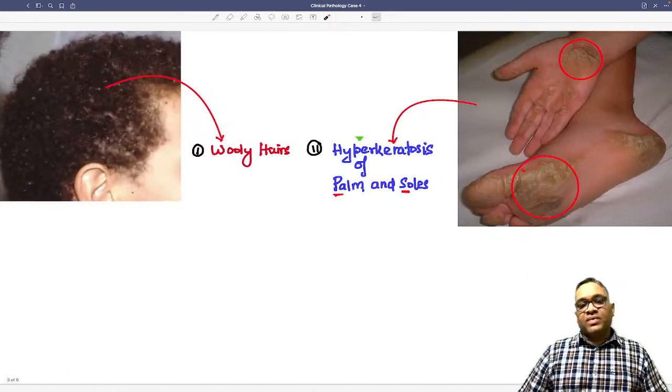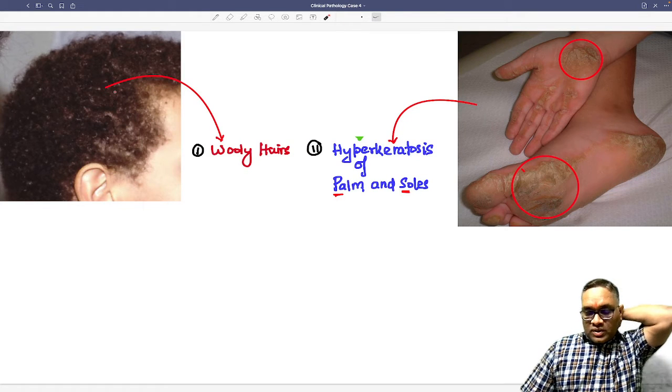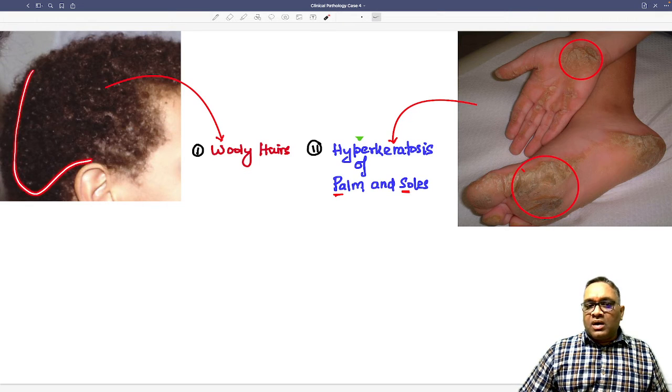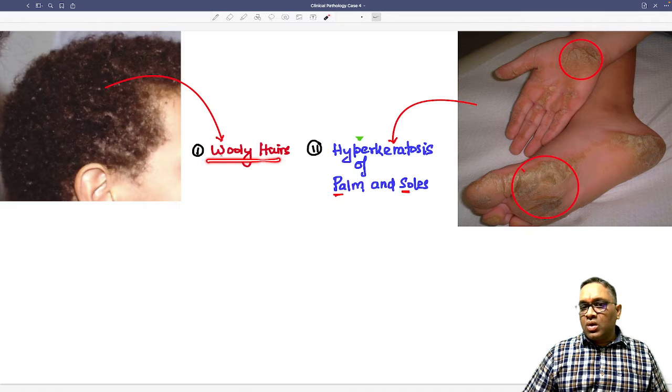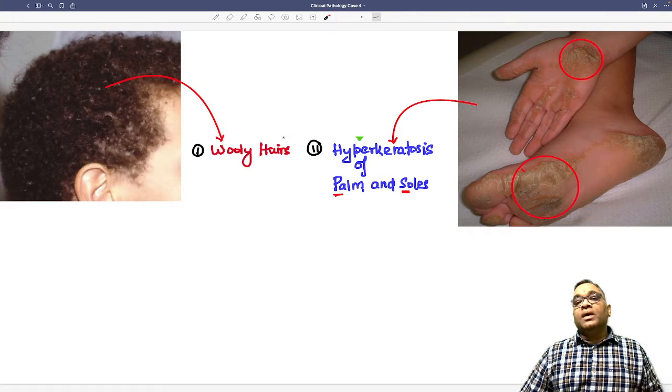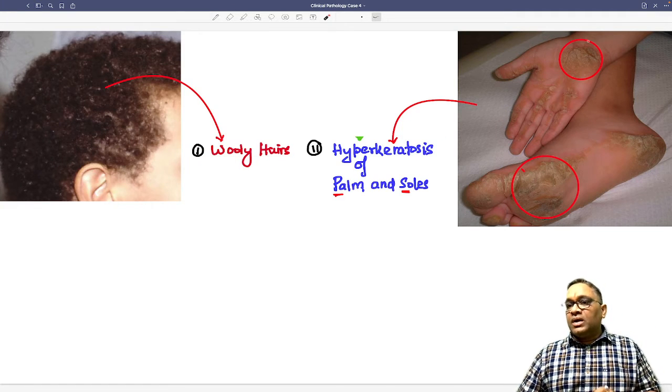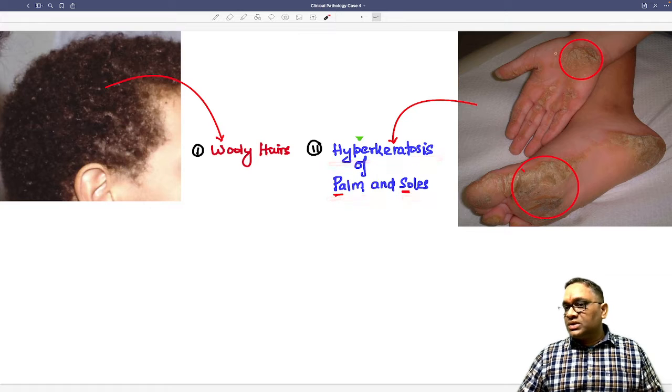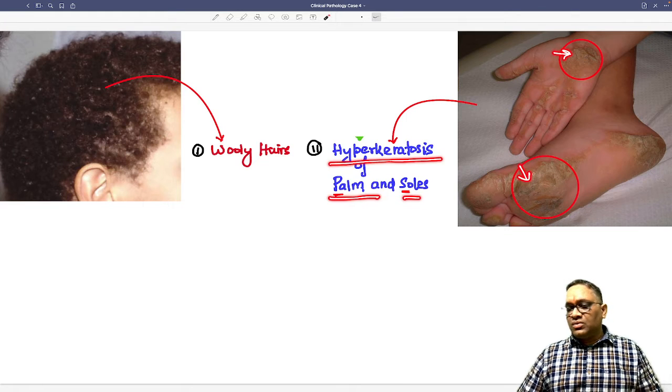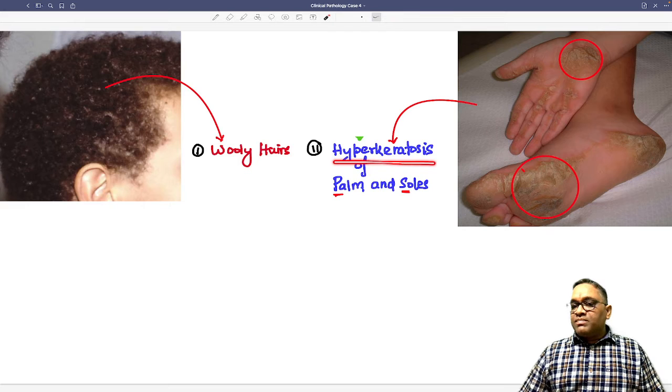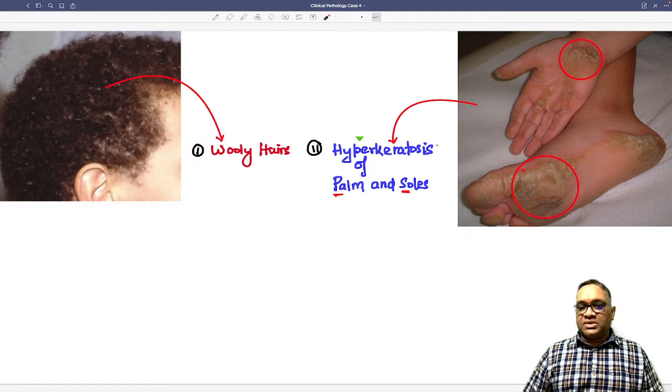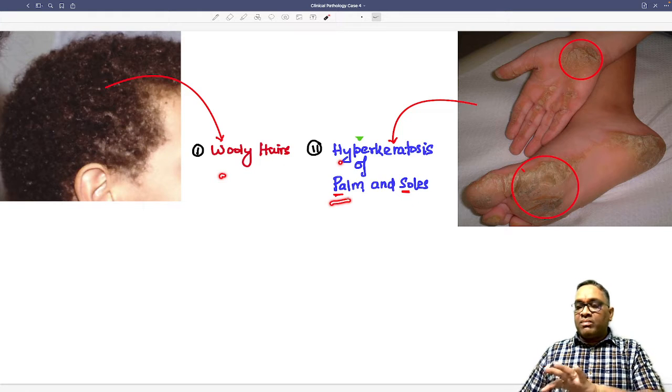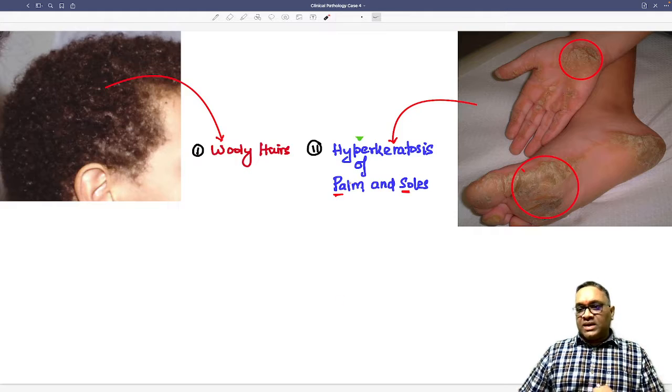Let us see one by one. When you are seeing the clinical findings, what you are observing here is a very characteristic type of woolly hair. Number one, we are seeing woolly hair in this patient. And if you are looking at the examination of the palm and sole, you are seeing hyperkeratosis of palm and sole. These are the yellowish thick areas, the dirty muddy looking areas. These are the areas of hyperkeratosis where excessive amount of keratin has been deposited on the palm and sole. These are the findings on clinical examination.